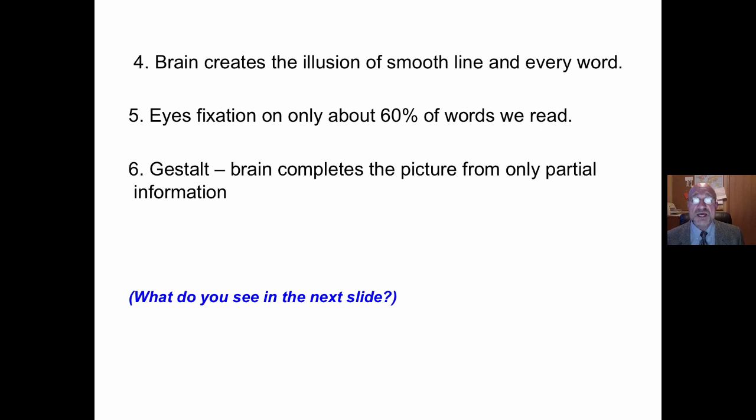Now why is that important? The brain, information flowing top down, creates the illusion of a smooth line. It creates the illusion that we read every word. But our eyes only fixate on about 60% of the words. More familiar, fewer. Less familiar information, more fixations.